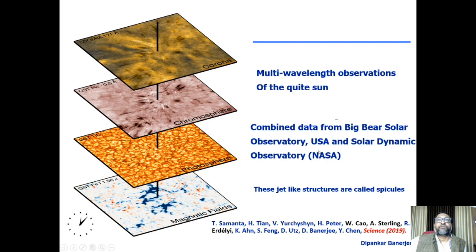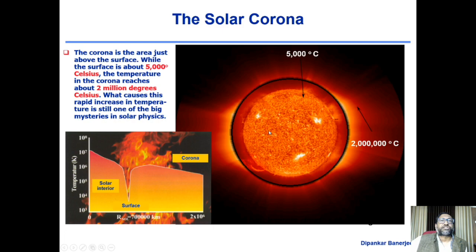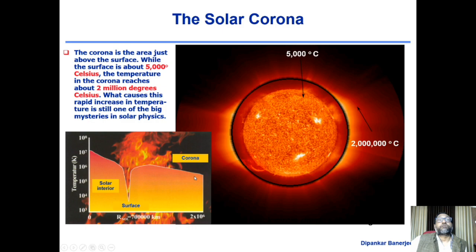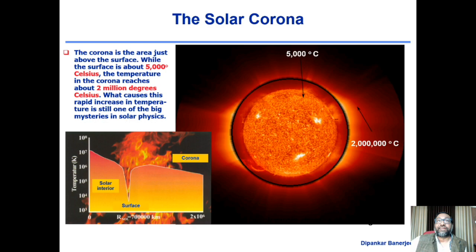This is the corona temperature profile. In the core, solar thermonuclear reactions take place at 10 to the power 7 Kelvin. Coming to the surface, temperature drops to about 6,000 Kelvin. Going away into the outer atmosphere, the temperature sharply rises, eventually maintaining at millions of degrees Kelvin. This mystery is still not fully understood. I have been working on this subject for 30 years — we have lots of understanding, but haven't been able to solve it completely.